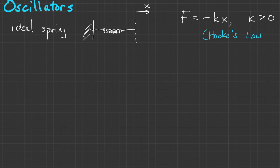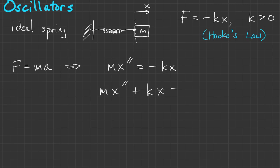Likewise, if x is negative, it will push. It's always in opposition to the displacement—that's the key to making an oscillation. If we attach a mass to the thing and apply Newton's law, then we get mx'' = -kx, or mx'' + kx = 0.